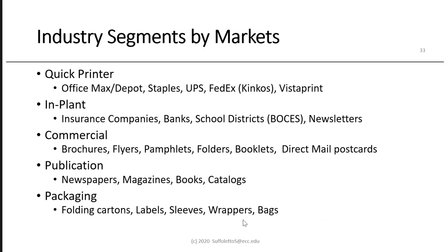Industry segments by market: quick printers include OfficeMax, Office Depot, Staples, UPS, FedEx (which bought Kinko's), and Vistaprint. In-plants would be large insurance companies, banks, or school districts printing newsletters — in Buffalo, I think of BOCES, the Board of Cooperative Education Services. Commercial printing — most sheet-fed offset lithography — produces brochures, flyers, pamphlets, folders, booklets, and direct mail postcards. Publications (newspapers, magazines, books, catalogs) are all in decline because of smartphones, social media, and internet information. Packaging is in very strong growth — folding cartons, labels, sleeves, wrappers, and bags — much of it done by flexography.